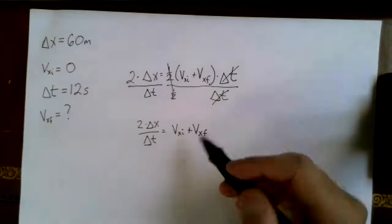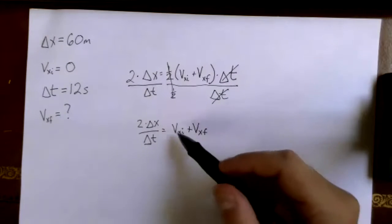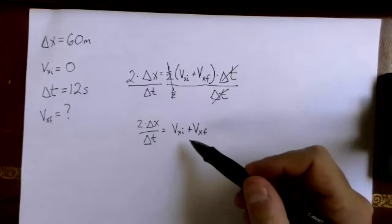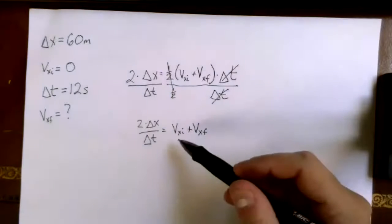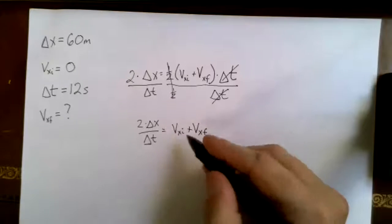Now I have just one step left if I want to get my final velocity by itself. What's the last thing I need to do to get rid of V_xi from this side? We have to subtract the initial velocity from both sides.